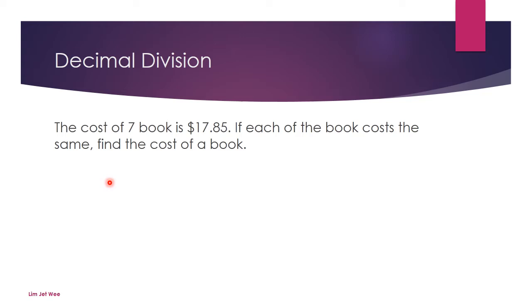a sample question, let's say the cost of seven books is $17.85. If each of the books costs the same, then find the cost of a book. So of course, this is the price for a total of seven books,